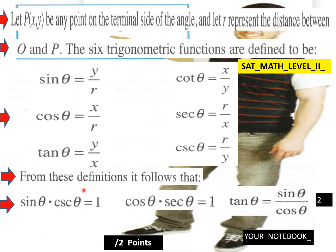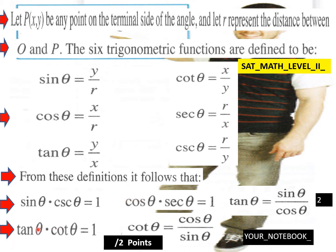From these definitions, it follows that sine theta times cosecant theta equals 1, cosine theta times secant theta equals 1, tan theta times cotan theta equals 1, and cotan theta equals cosine over sine theta.